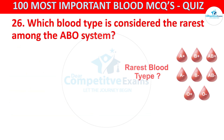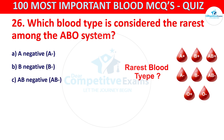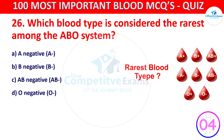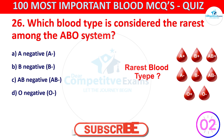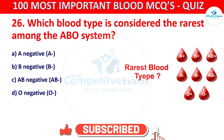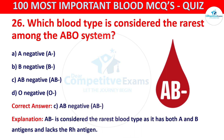Which blood type is considered the rarest among the ABO system? Your options are A negative, B negative, AB negative, or O negative. The correct answer is C, that is AB negative. AB negative is considered the rarest blood type as it has both A and B antigens and lacks the Rh antigen. Question 27.